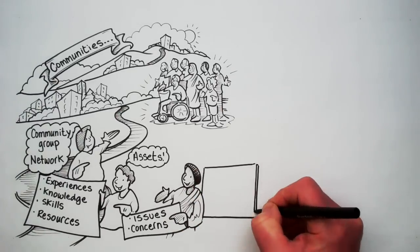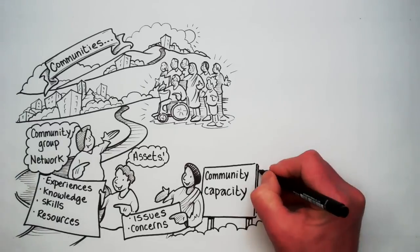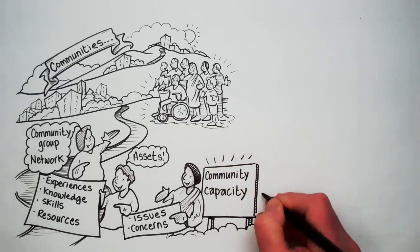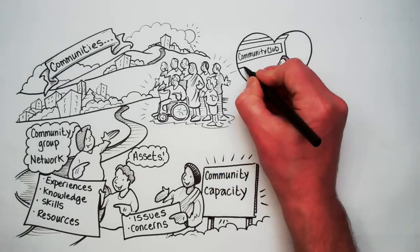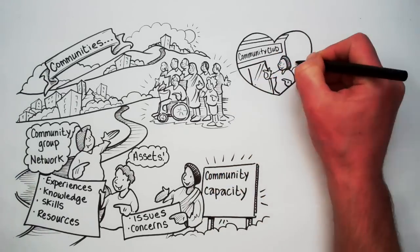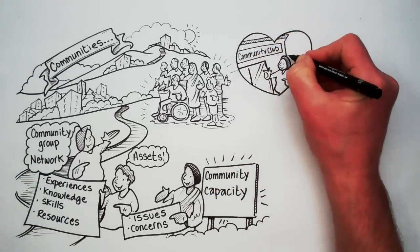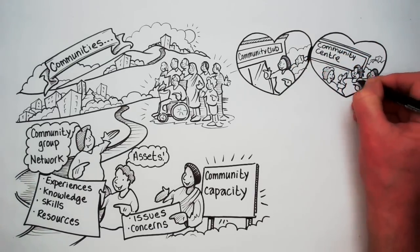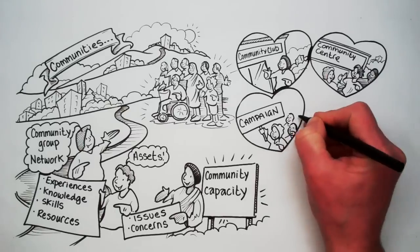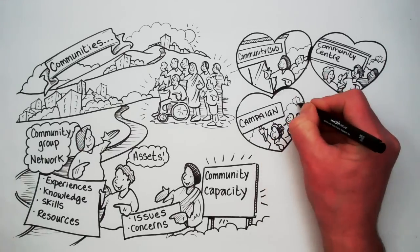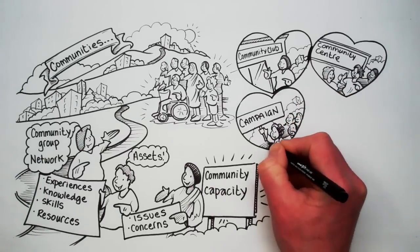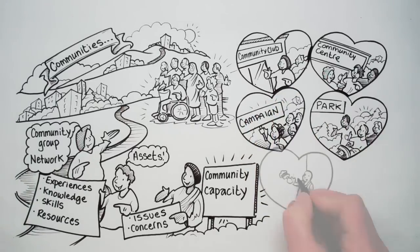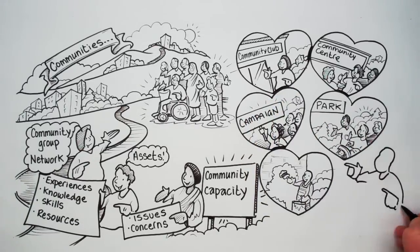The extent to which they can do this is called Community Capacity. Communities with capacity can, for example, run clubs or events for social benefit and mutual support, manage their own community centres that offer social and learning activities, mount campaigns that address important issues, help inform and improve public services and, in some cases, provide services which are for the people, by the people.